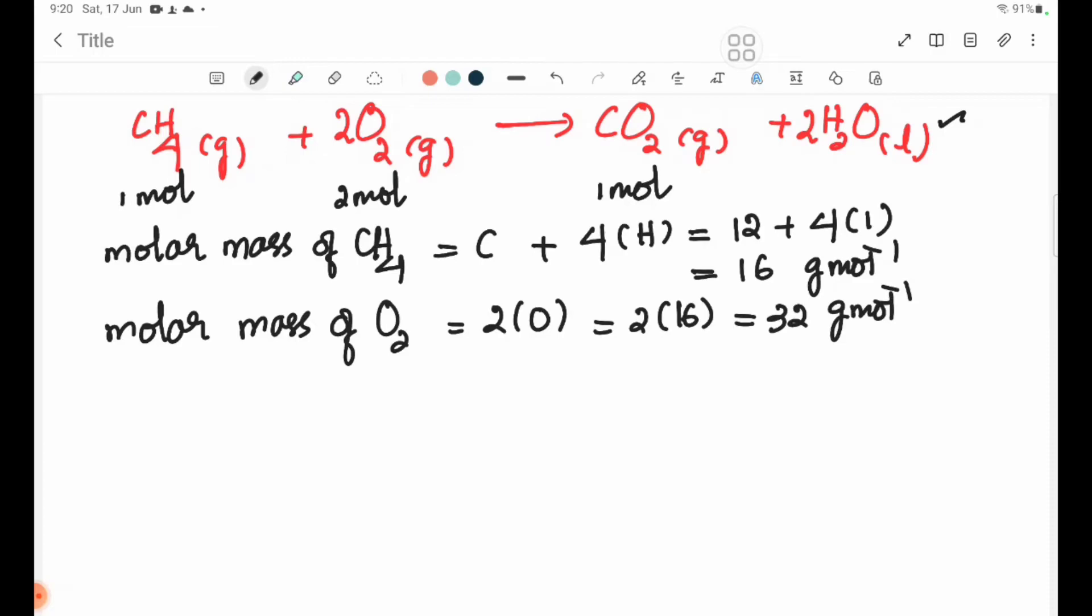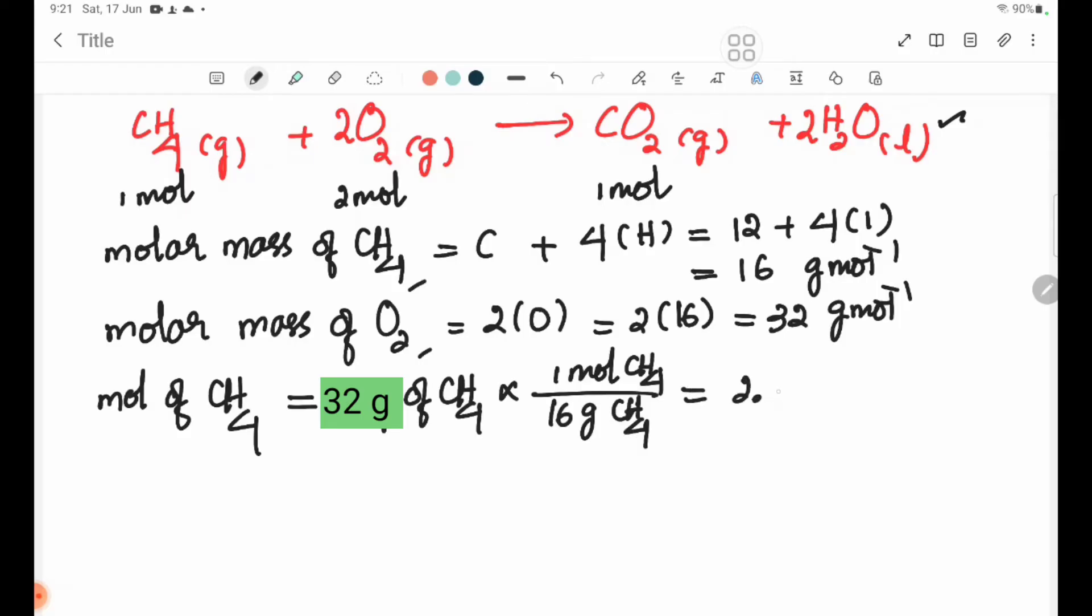The mol of CH4 equals 32g of CH4 times 1 mol CH4 over 16g CH4, equals 2.0 mol of CH4.